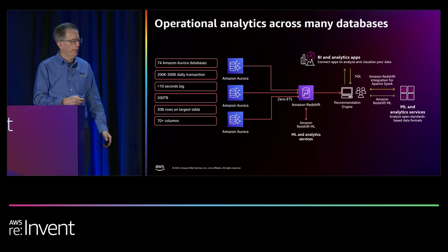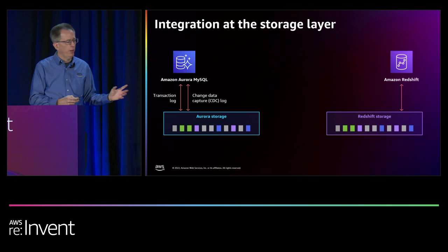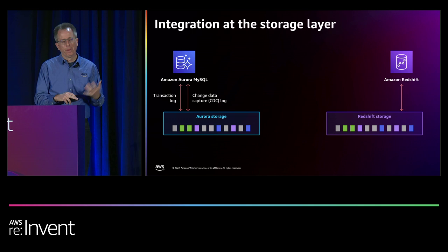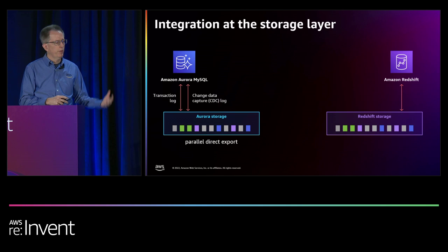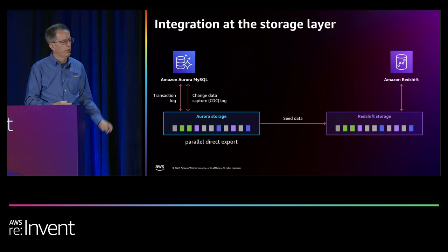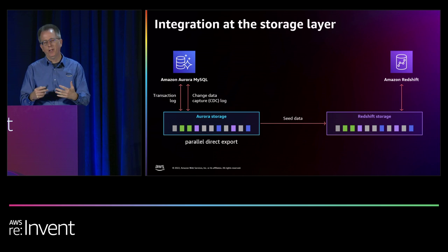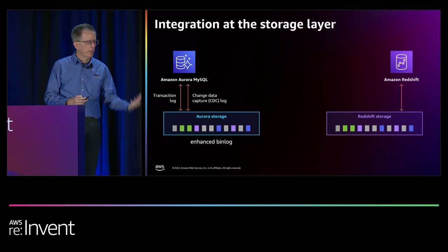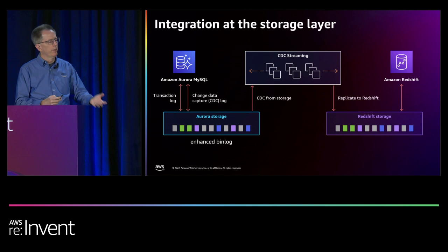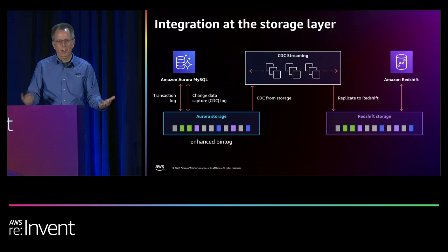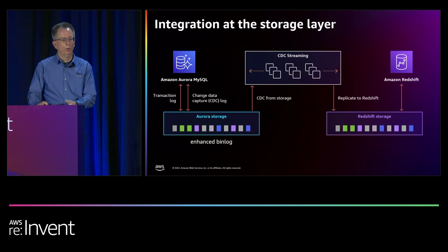The technical foundation of zero ETL integration is storage-to-storage based. Aurora storage captures both the transaction log and the change data capture log — the enhanced bin log. First, we seed Redshift using the parallel direct export, which can move terabytes very quickly. Then the enhanced bin log feeds continuously from storage through a CDC streaming service into Redshift, keeping lag below 10 seconds. Even when you make schema changes to Aurora, we either flow those changes through or re-seed as needed, so the integration handles things that would normally break an ETL process.